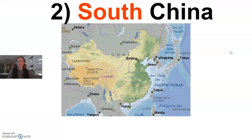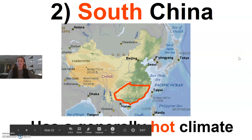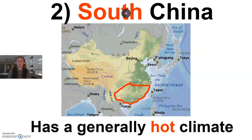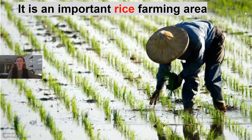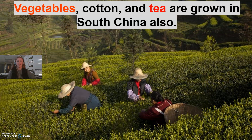The second region of China is South China, which is located right here. South China has a generally hot climate, and it is a really important rice farming area. You know from previous units that rice needs a very warm environment to thrive in — South China has that, so there is a lot of rice harvested there. Other things grown there include various types of vegetables, cotton, and tea.